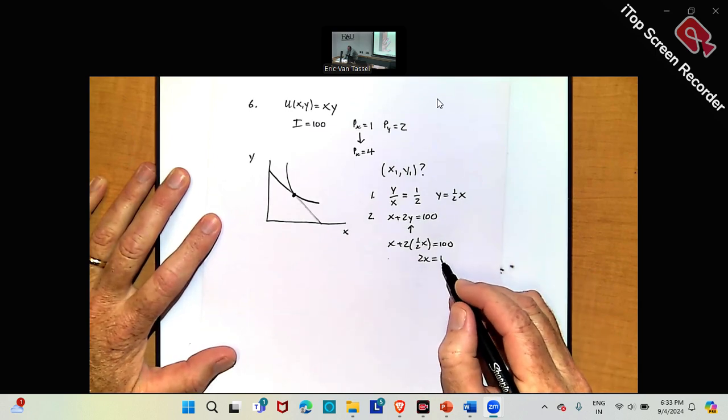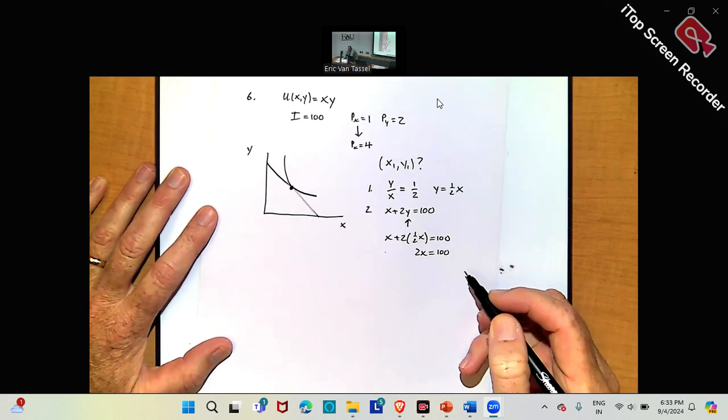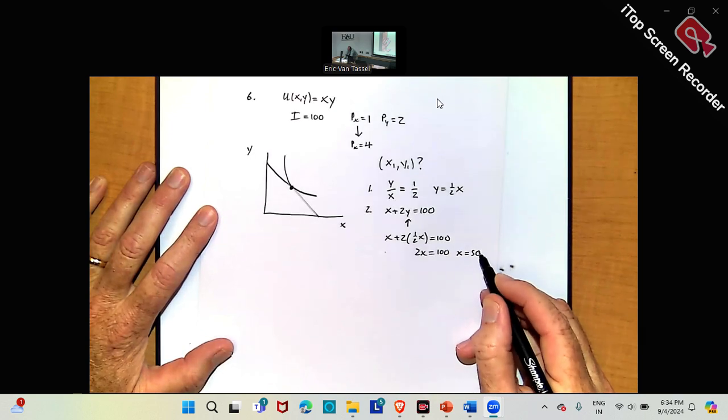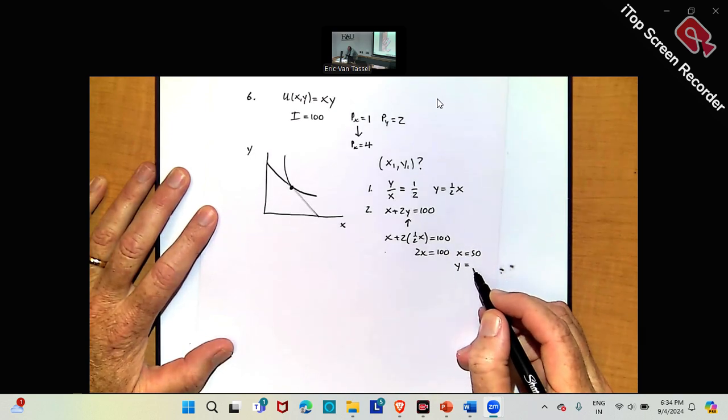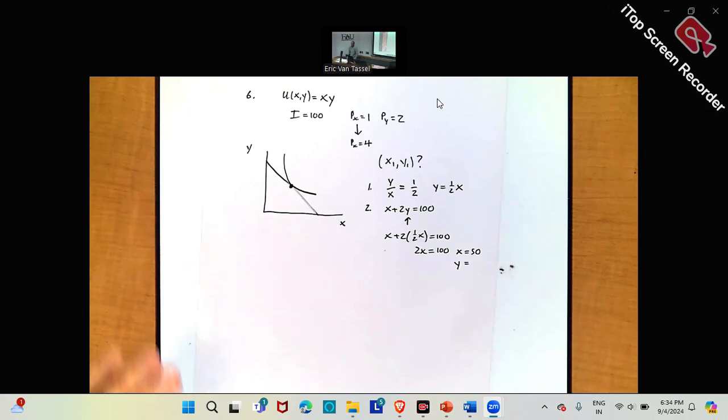So I have x plus 2 times 1 half x equals 100. So it looks like 2x equals 100, is that right? Where x is 50, y is half that.